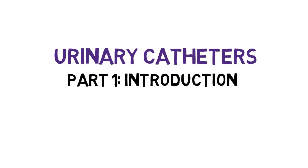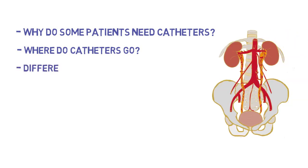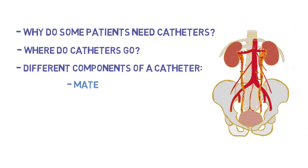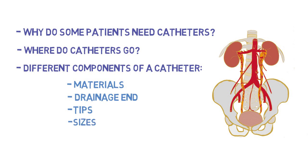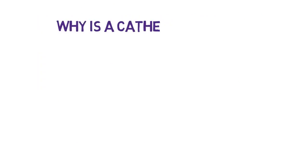Urinary catheters: everything one needs to know. Part 1, introduction. Today we're going to discuss why some patients require a urinary catheter, whereabouts these catheters can be placed along the GU tract. We're going to explore the different elements of urinary catheters, such as the materials they're made of, the difference between a single, two-way, or three-way port system. We'll discuss the different applications for different catheter tips, as well as different French sizes or diameters of the urinary catheters.